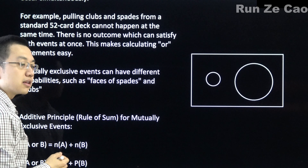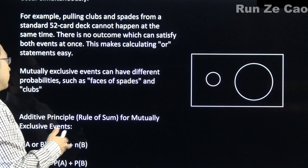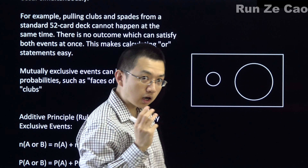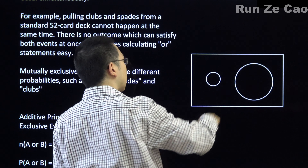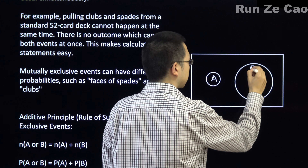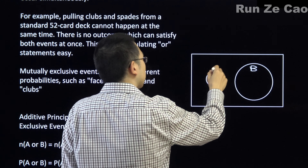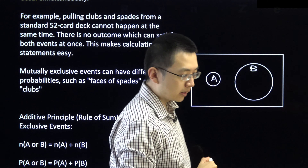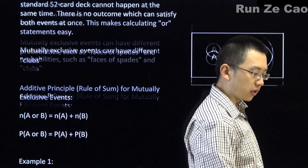Other examples — cards are pretty standard because for dice there aren't that many examples you can do of non-mutually exclusive events. For cards, from a standard 52 card deck, you can pull spades, clubs, hearts, and diamonds. Any of these suits is mutually exclusive with all of the others because they do not overlap in the outcomes that these events describe.